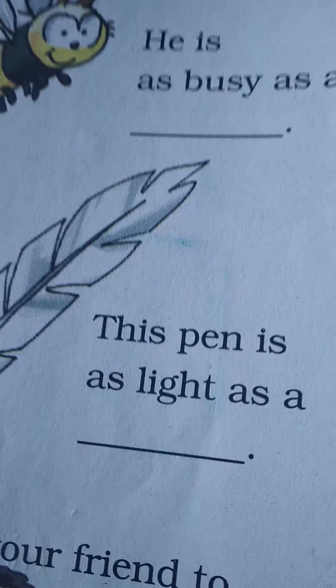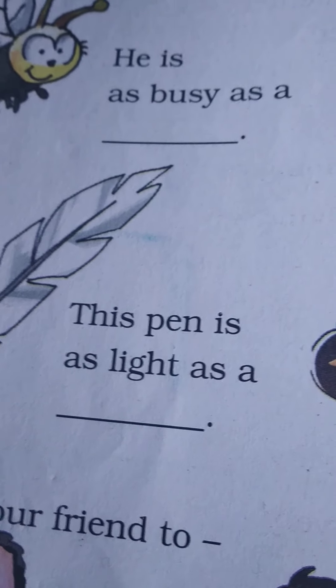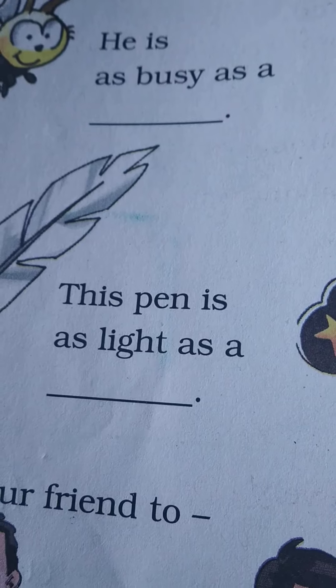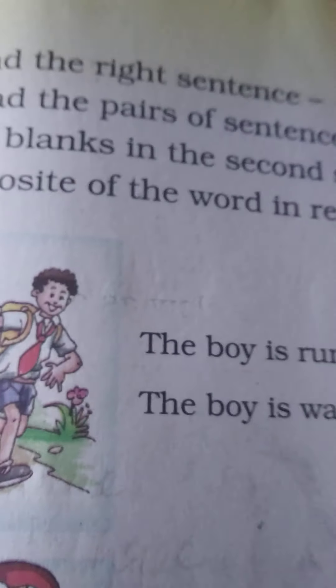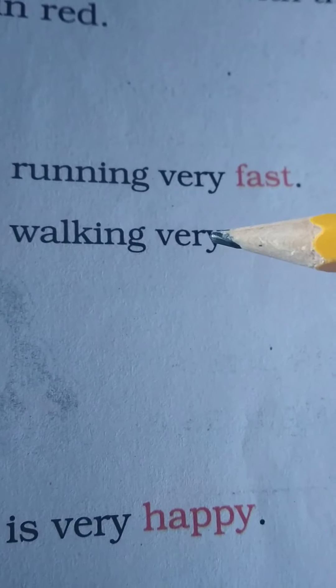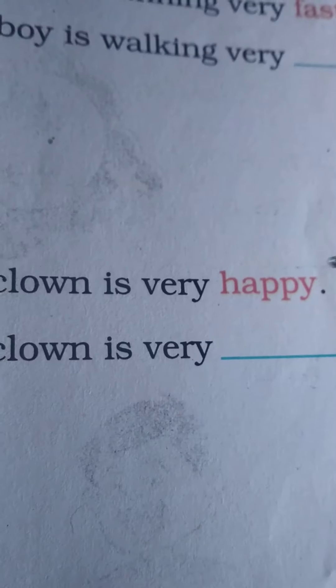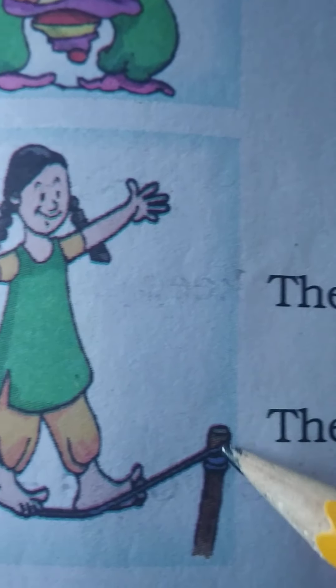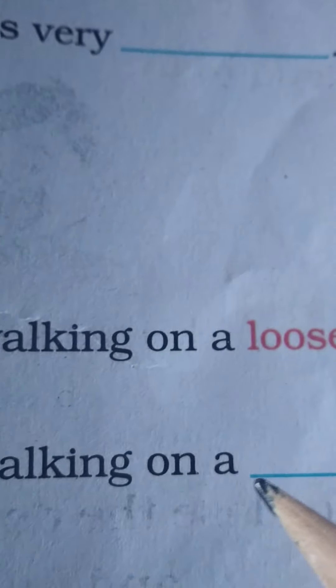That's the end of that exercise. Now let's move on — after you've done these in your notebook — to page 109. It says: find the right sentence. Read the pairs of sentences and fill in the blanks with the opposite of the word in red. The boy is running very fast — the boy is walking very slow. The clown at a circus is very happy — the clown is very sad. The girl is walking on a loose rope — loose, it's hanging loose — and the opposite: the girl is walking on a tight rope. T-I-G-H-T.